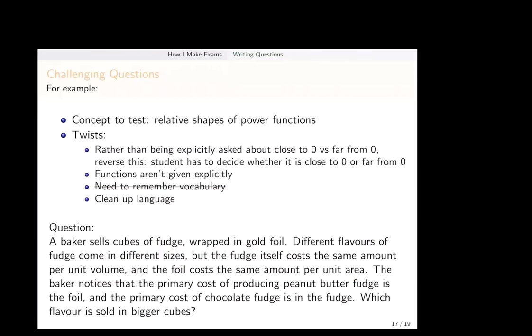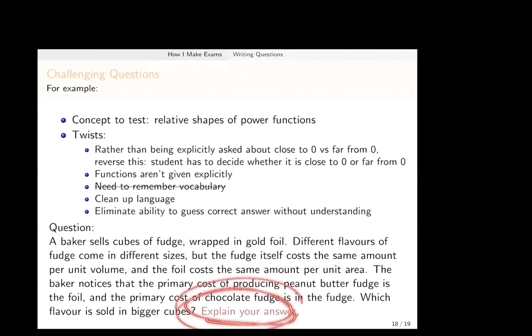So the thing that you're asked is, okay, are we close to zero or far away? So I've changed that into which is sold in bigger cubes. So one of these is close to zero with a small side length. One of them is far from zero with a big side length, but there's actually only two options here, either peanut butter or fudge. So let's add something so that we can't just guess the answer. So now this is the skeleton of a question that I really might put on an exam. It is testing a very particular concept. I've tried to make it relatively readable and I've tried because it's a challenge question to give it a little bit of a twist.